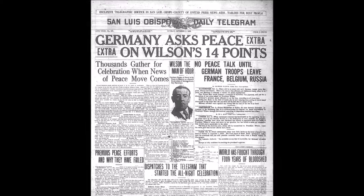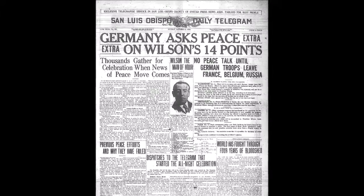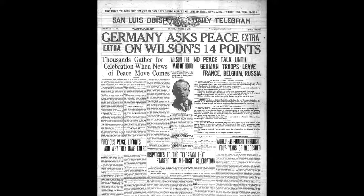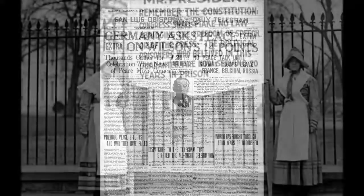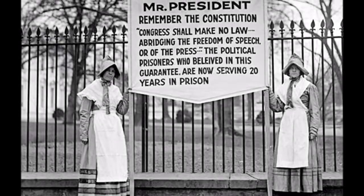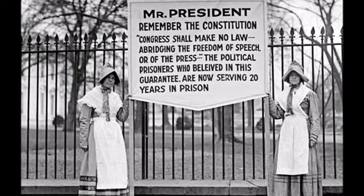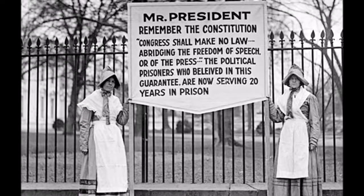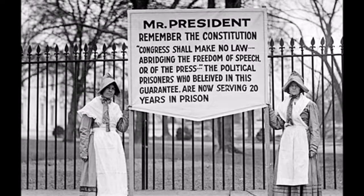On January 8, 1918, Wilson gave his 14-point speech to talk about negotiating peace with other nations. On May 16, 1918, Wilson enacted the Sedition Act to silence people speaking badly about the government.